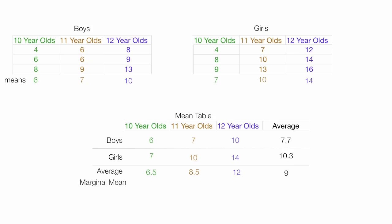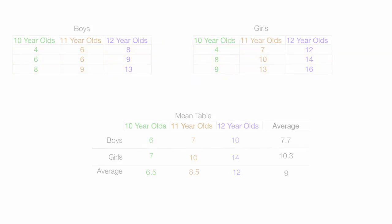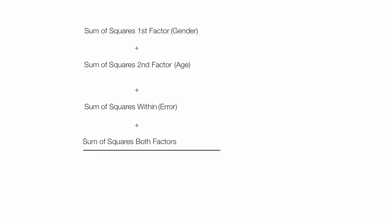These averages are also called marginal means. I calculated mean values for test scores by different groups — 10-year-old boys, 11-year-old boys, 12-year-old boys — and the average for all boys, all girls by age group, and the grand total average for all children. I'm going to calculate sum of squares for: the first factor (gender), the second factor (age), sum of squares within (error), and sum of squares between both factors. I'll calculate the first three directly, then determine sum of squares for both factors algebraically.